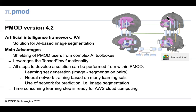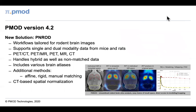The time-consuming learning step can be performed using Amazon's AWS Cloud Computing. We're also introducing a dedicated brain analysis tool for rodents, PNROD, based on our successful neuro tool for human brain PET/MR. PNROD supports workflows tailored to rodent brain images, working with mice and rats in single or dual modality data: PET-CT, PET-MR, or standalone PET, MR, or CT. It handles hybrid and non-matched data, includes various brain atlases, non-rigid, affine, rigid, and manual matching methods, and CT-based spatial normalization templates.